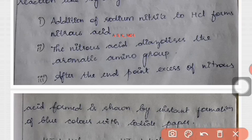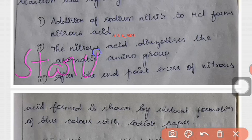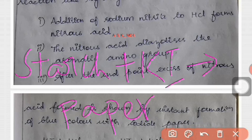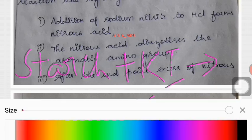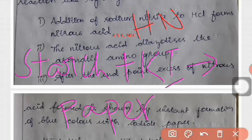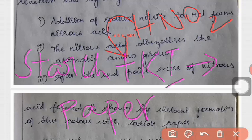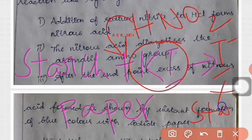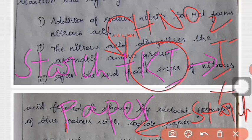How is the end point determined? Starch plus potassium iodide is impregnated on a paper. When nitrous acid is added to this starch and potassium iodide, the iodide is released as iodine. That is, potassium iodide is released to give iodine. This iodine combines with starch to give blue color.